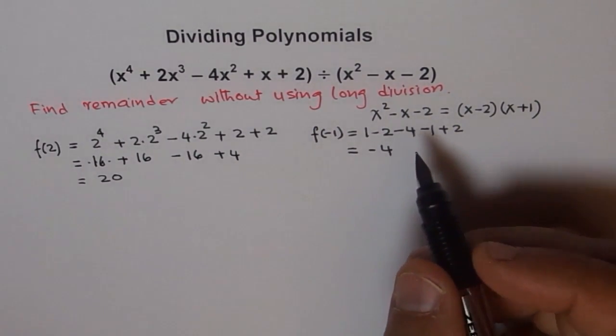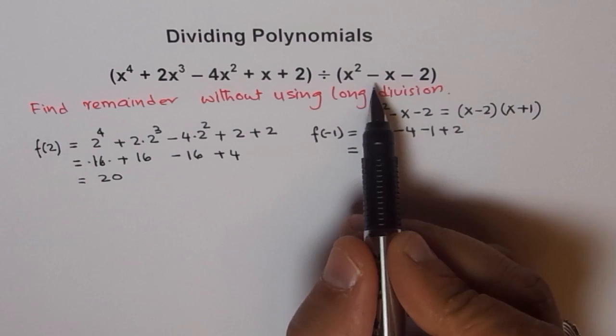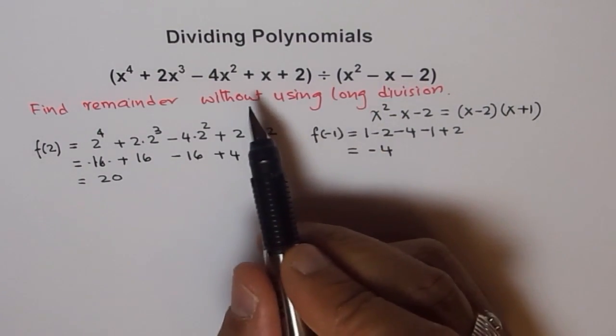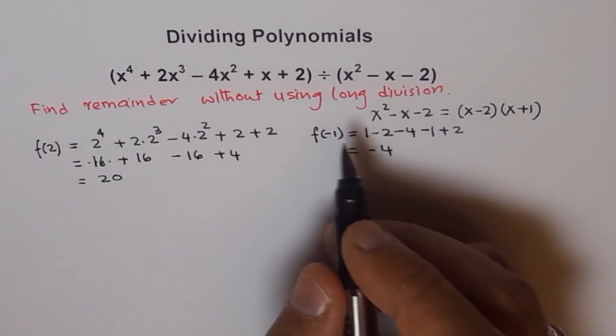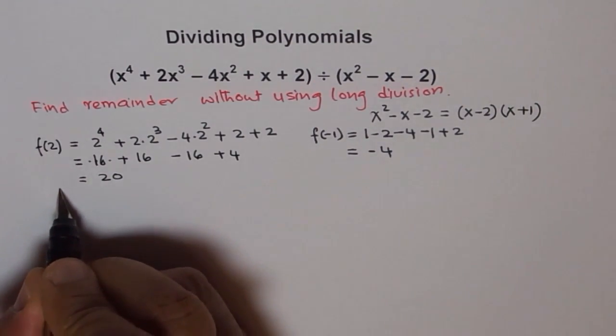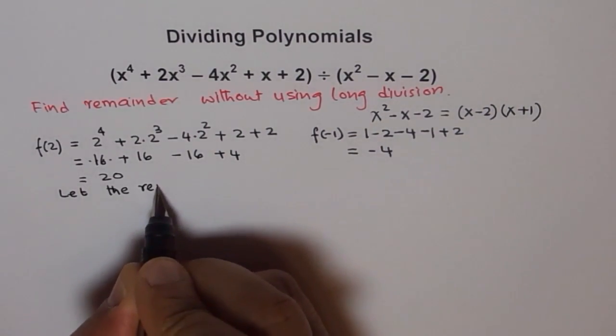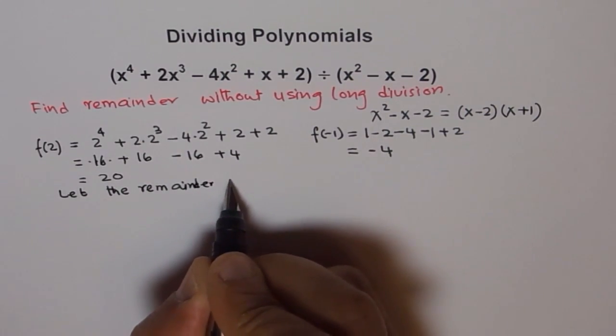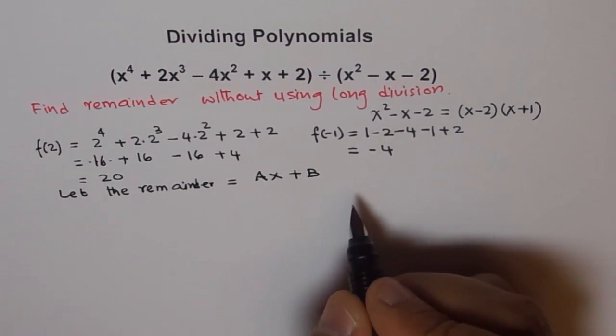So, f(-1) is -4. Another thing we observed is, if I divide this function by that, since the degree difference is 2, the quotient should be of degree 2, and the remainder should be of, at least, degree 1. So let's assume, let the remainder be equals to Ax + B.